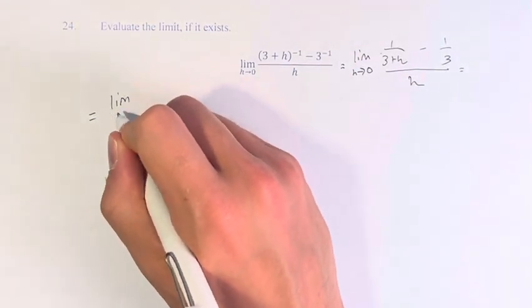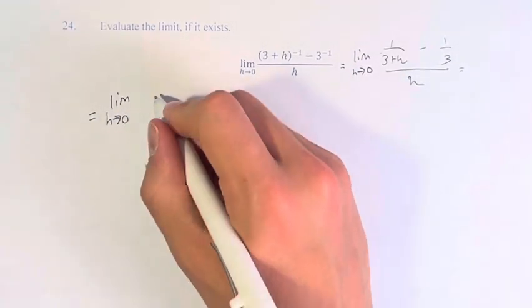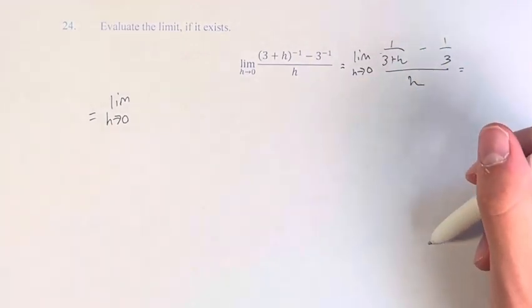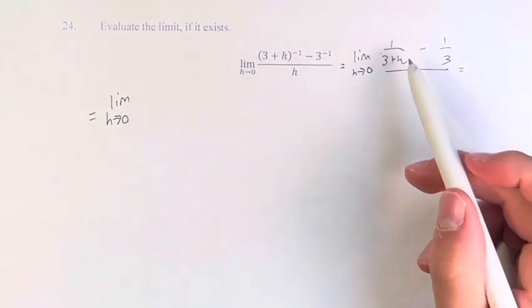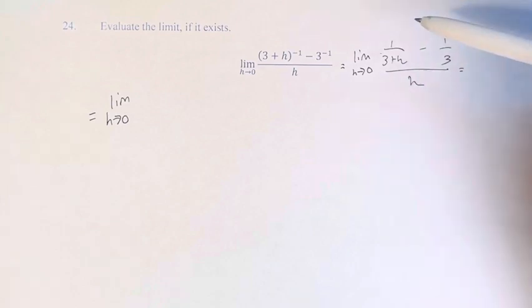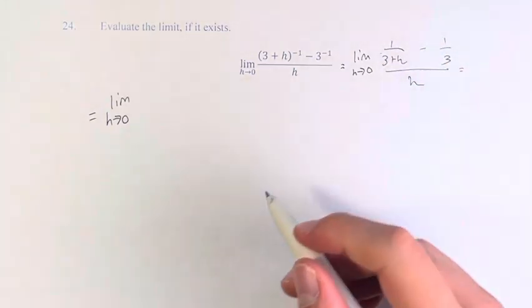Now the problem with evaluating this limit is if we plugged in 0 directly then we would just be divided by 0, and obviously we can't do that. So the first thing I'm going to do is simplify the numerator into one fraction. To subtract two fractions they need to have the same denominator, so we need to get a common denominator.